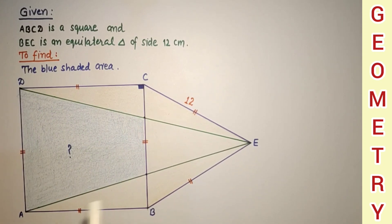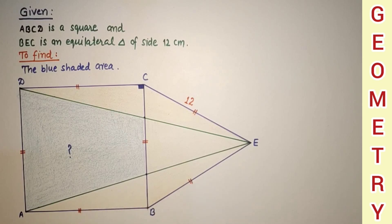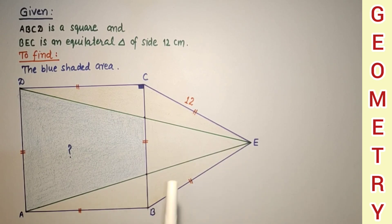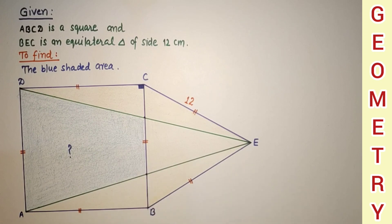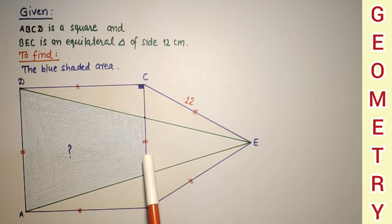By pure geometry we have two methods to solve this question, and by trigonometry also we can solve it. One method uses similarity of triangles and the other uses the angle bisector theorem. We will solve it using similarity of triangles.